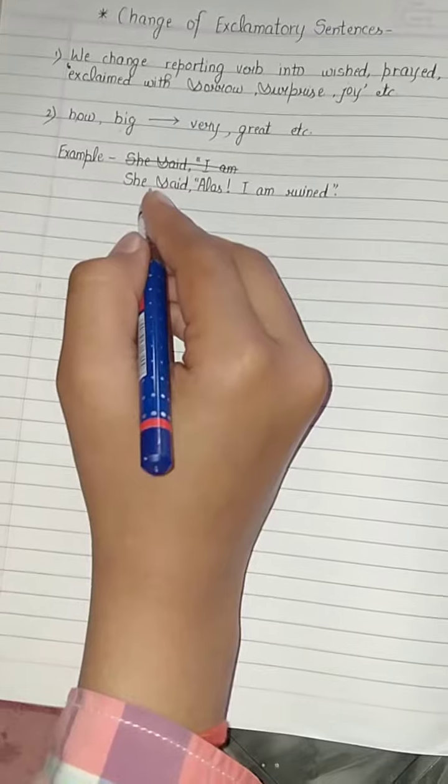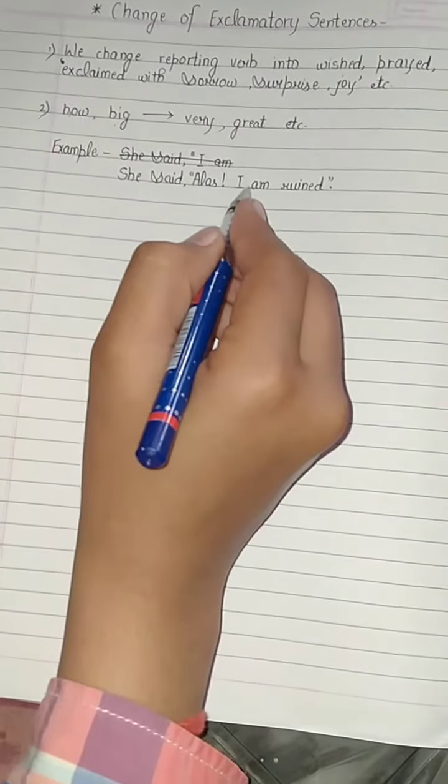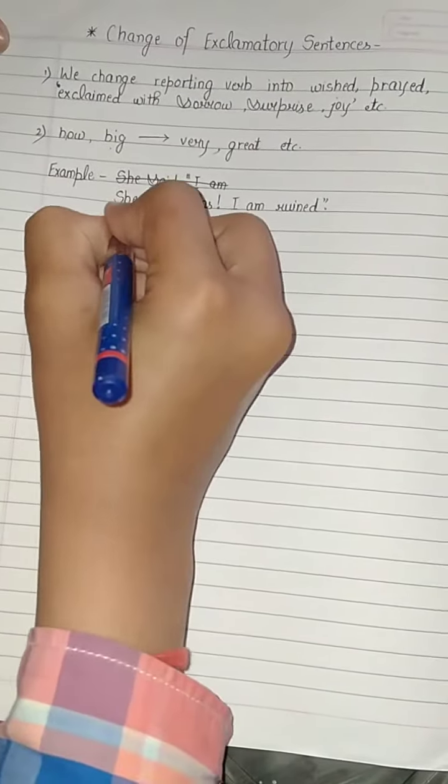So here we have an example: She said, 'Alas, I am ruined.' So we will make she exclaimed with sorrow that she was ruined.